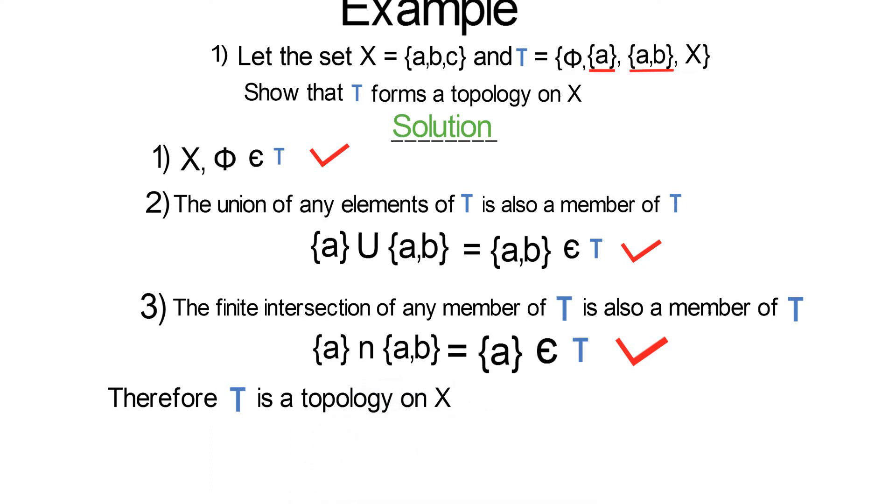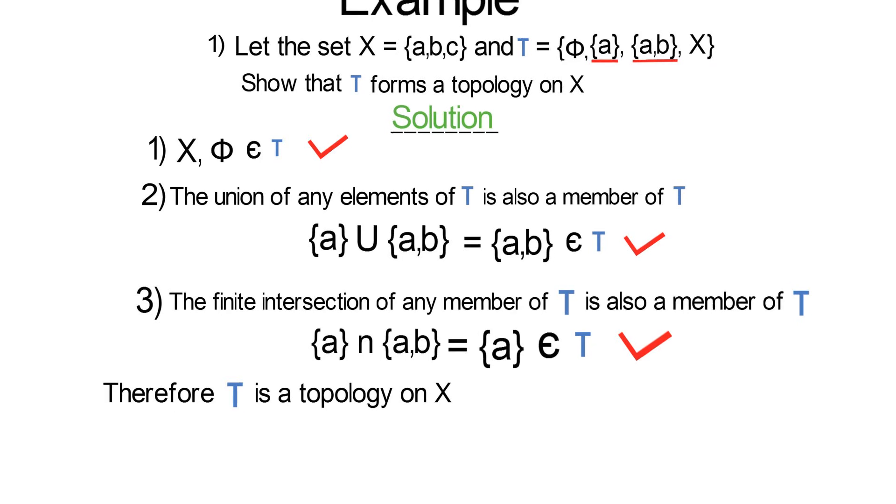I would also like to say that you are free to try out every element in tau, try to find the intersection, try to find their union. You will all see that they will all be an element of tau which proves that this is a topology on X.